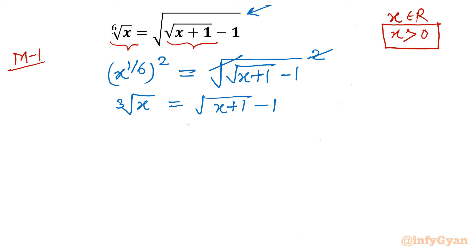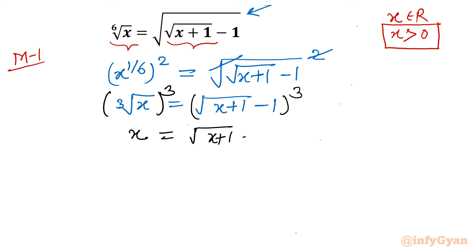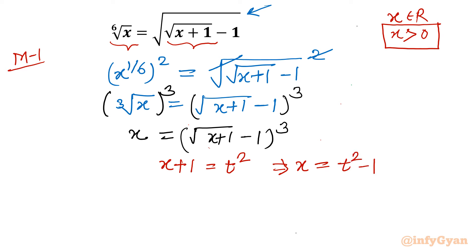Now before making a substitution, we can cube both sides to clear the cube root on the left. Left hand side becomes radical-free, and right hand side becomes (square root of (x plus 1) minus 1) cubed. Now we use the substitution: let x plus 1 equal t squared, so x equals t squared minus 1. Substituting, left hand side is t squared minus 1, and right hand side is (t minus 1) cubed.